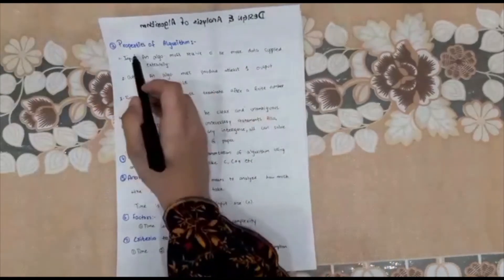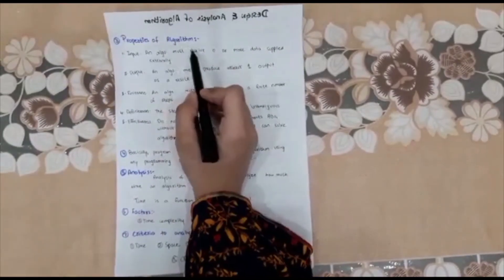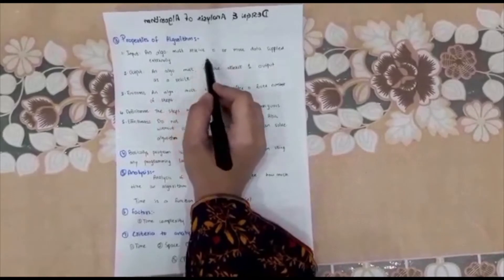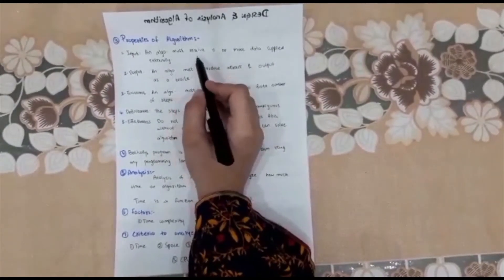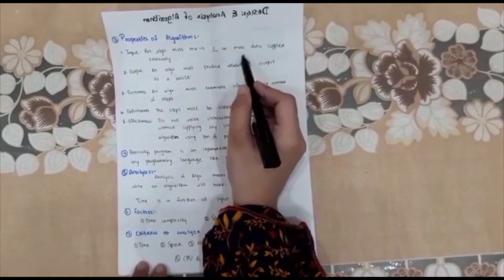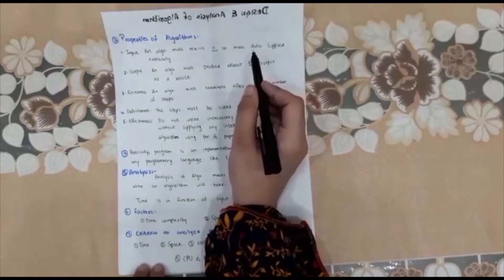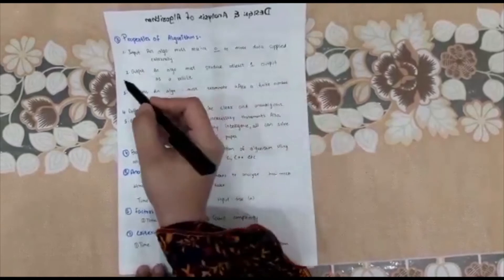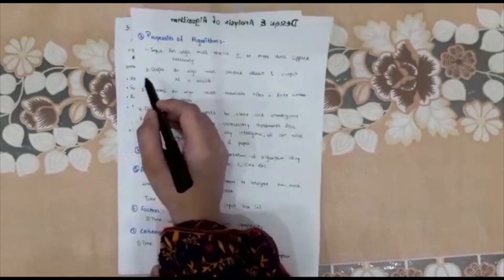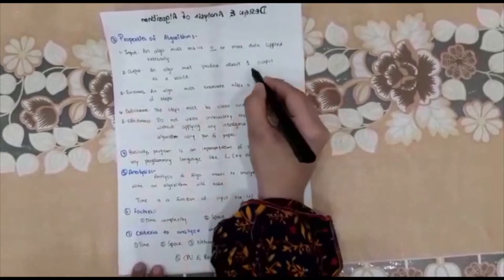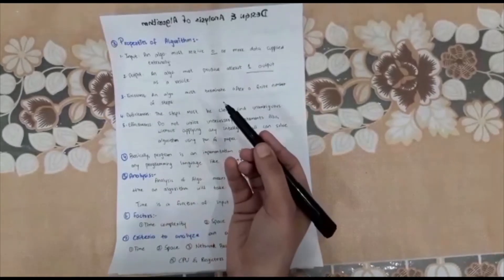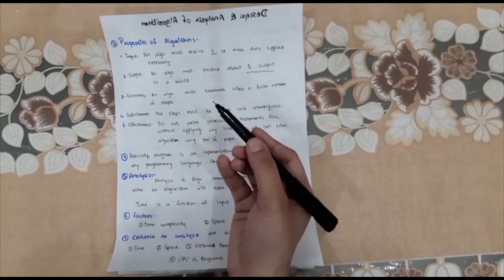Next, let's discuss the properties of an algorithm. We have five properties to discuss. The first property is Input: an algorithm must receive zero or more data supplied externally. This means an algorithm can have zero input, or one, two, or more inputs. Regarding output: an algorithm must produce at least one output as a result.